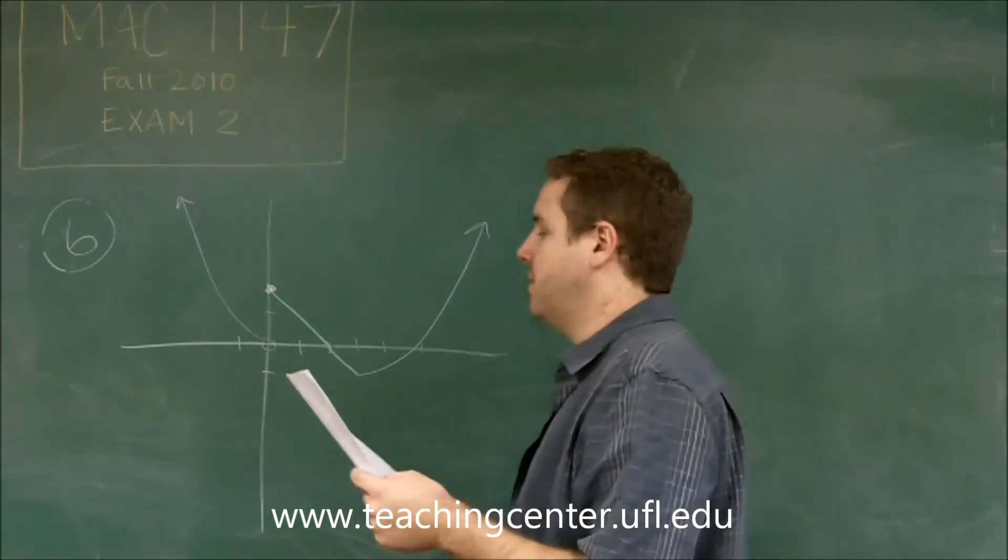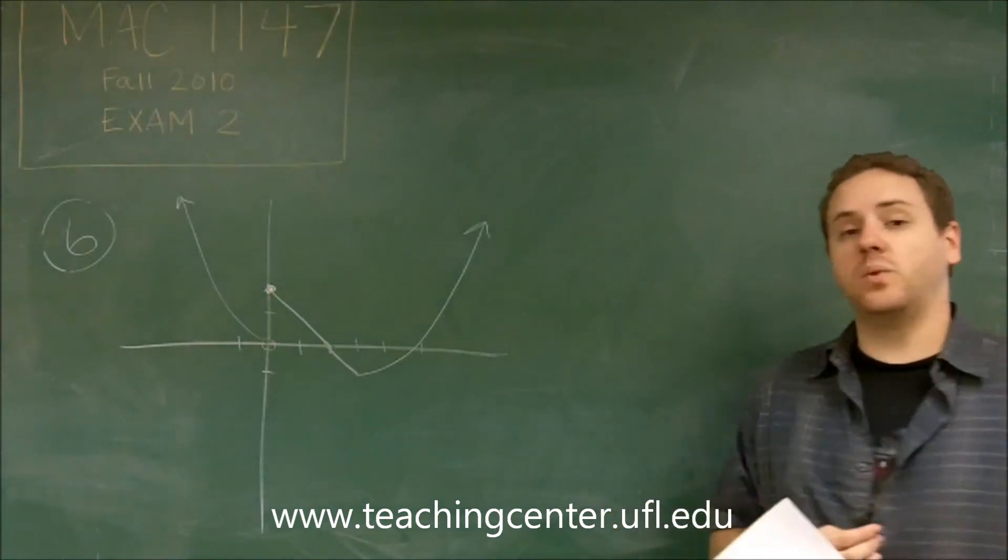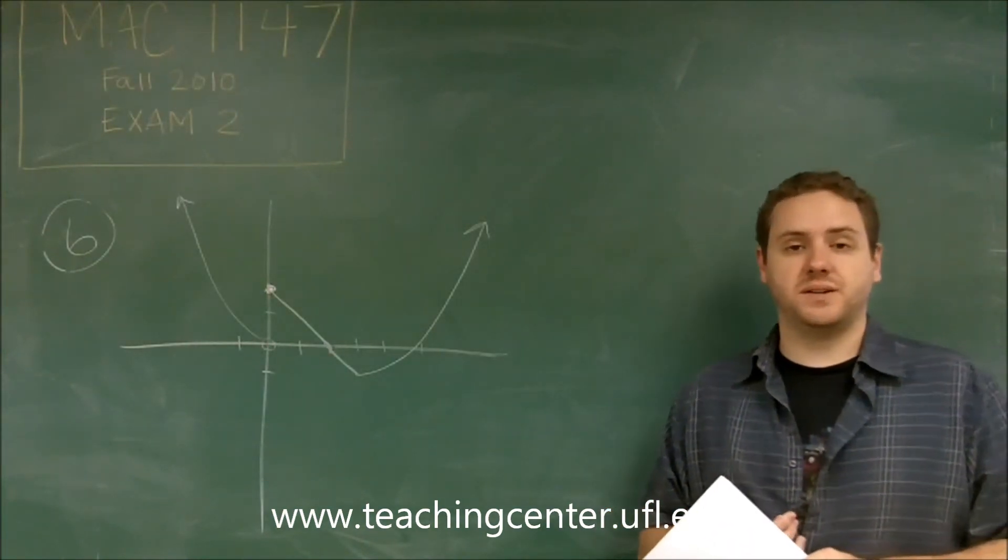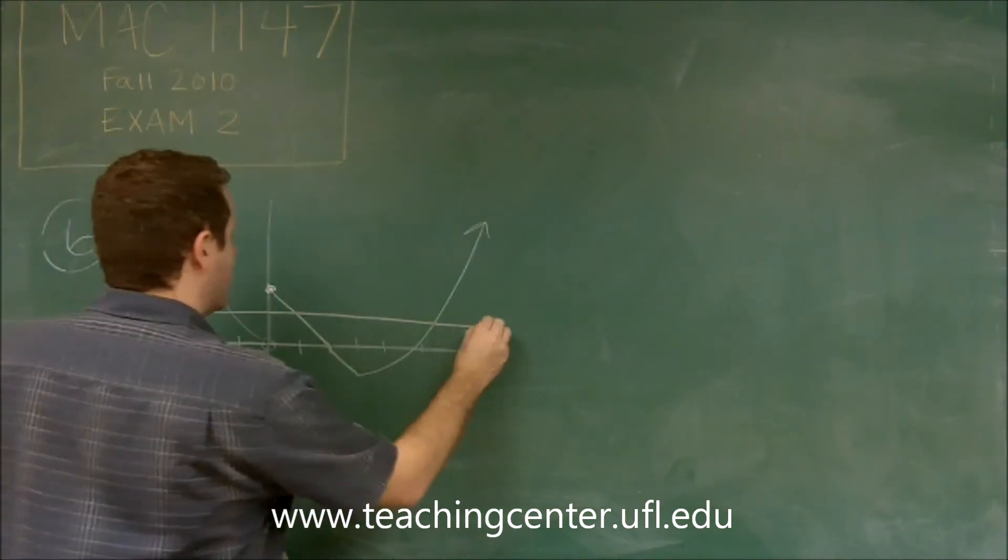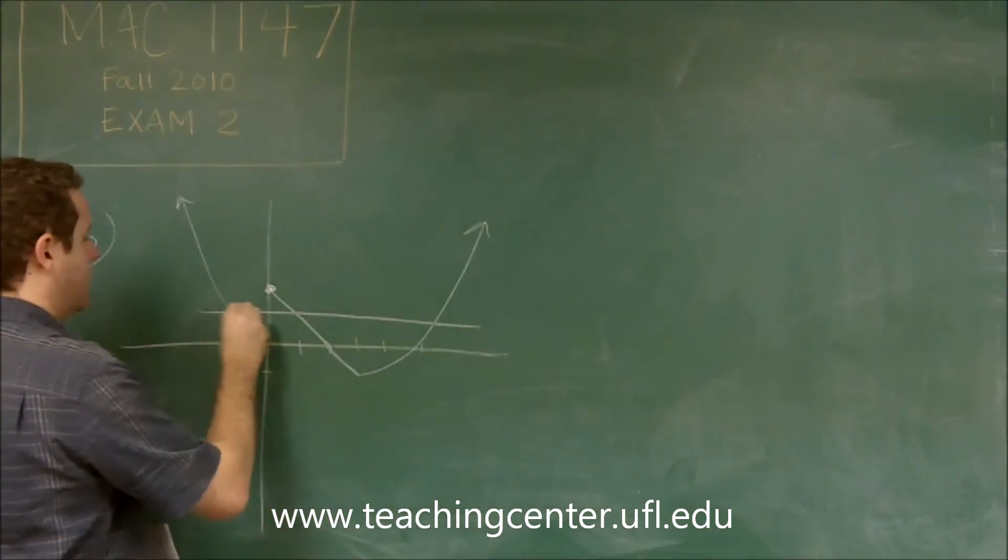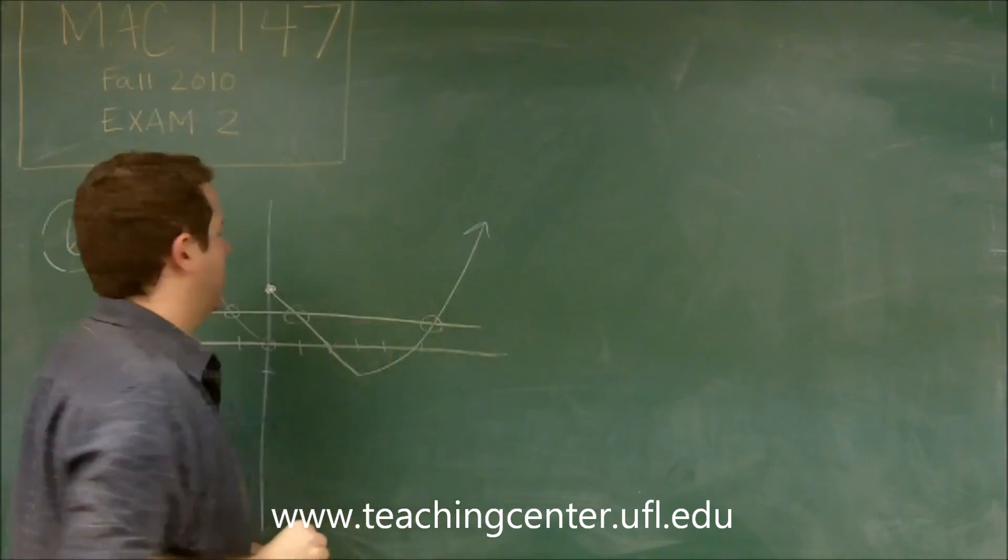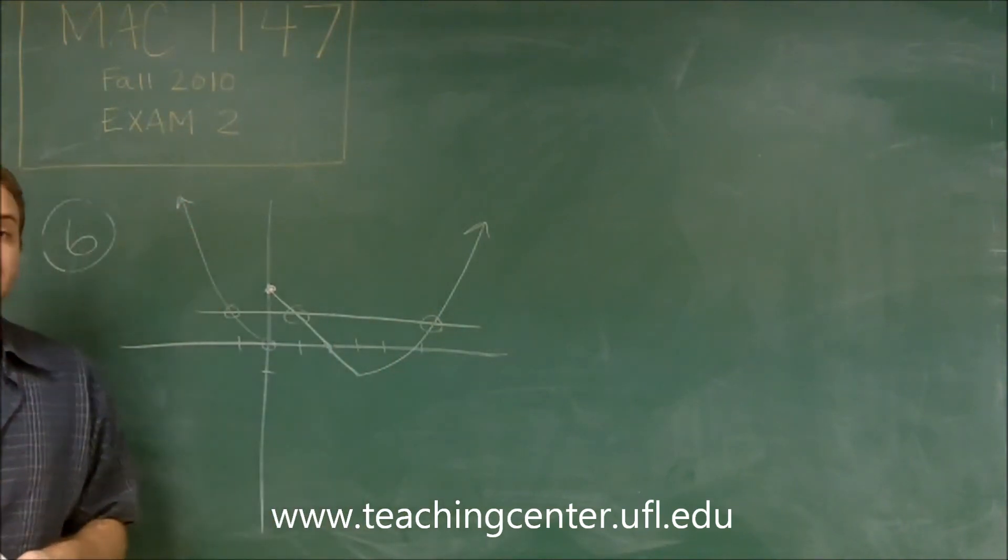B says f is one to one. Well for a function to be one to one it has to pass the horizontal line test. You can see here that drawing a horizontal line somewhere here definitely crosses more than one place. So this function is not one to one.